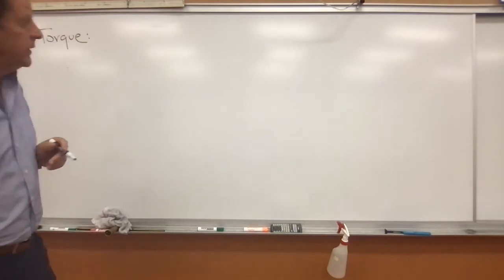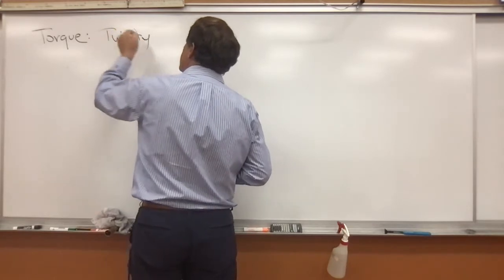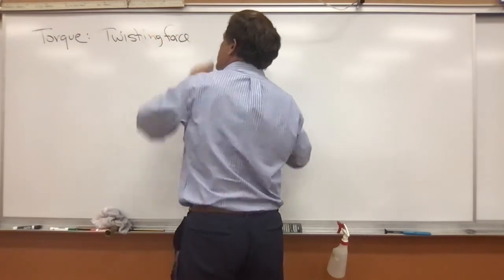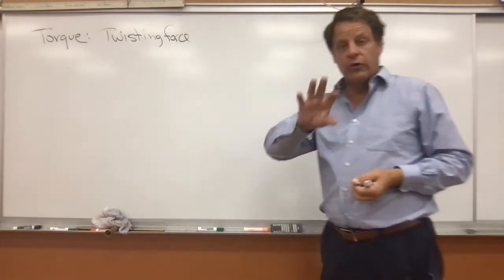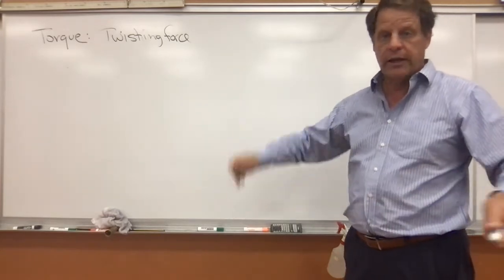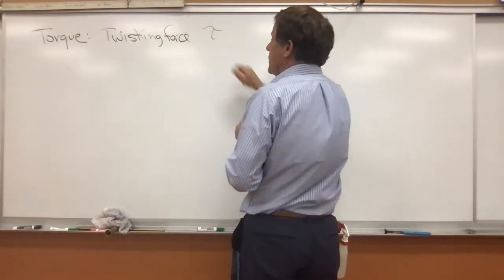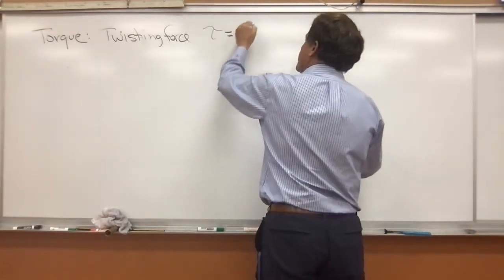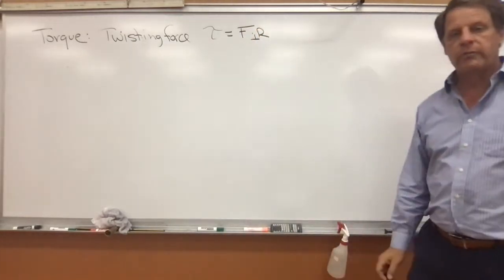We talked about this last week a bit, and we know that torque is a twisting force. We have some sort of force applied that causes something to turn, twist, rotate, or move in an angle. Torque, which uses the Greek letter tau, is equal to force times the perpendicular radius.